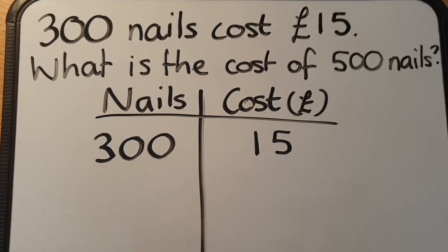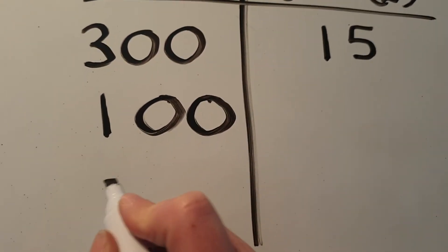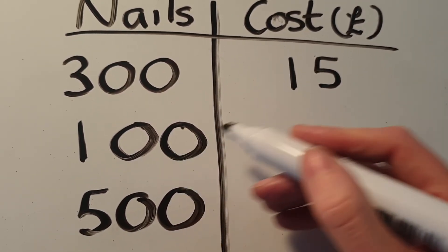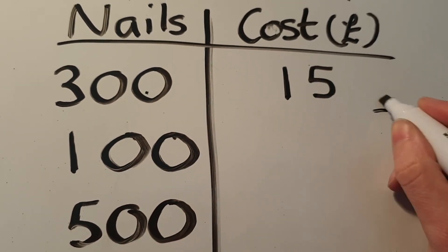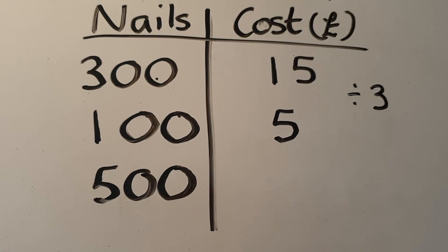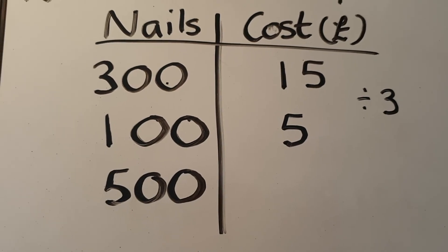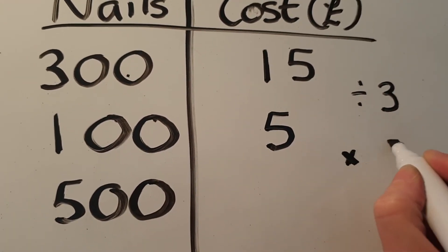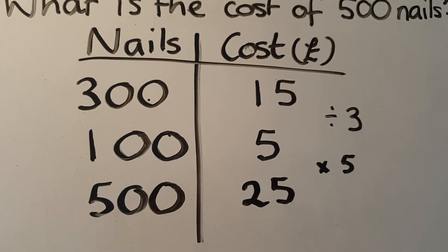Instead of writing the number one under three hundred, I'm going to write one hundred, because I can easily get from one hundred back up to five hundred, which is what we're trying to find. If three hundred nails cost fifteen pounds, one hundred nails are going to cost three times less, because three hundred divided by three gets us to one hundred. So we're going to divide fifteen by three as well to get five — one hundred nails would cost five pounds. Because one hundred times five makes five hundred, we're going to multiply five by five, so five hundred nails would cost twenty-five pounds.